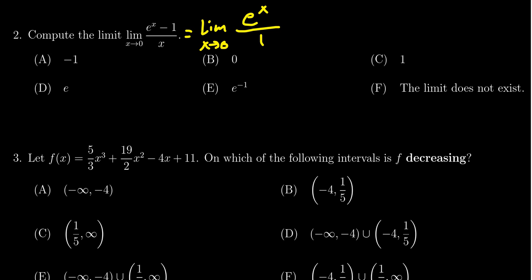So we take the limit as x approaches 0. In this situation, we can plug in x equals 0. We get e to the 0, which is equal to 1. And so by L'Hopital's rule, we see that the correct answer will be C, number 1.